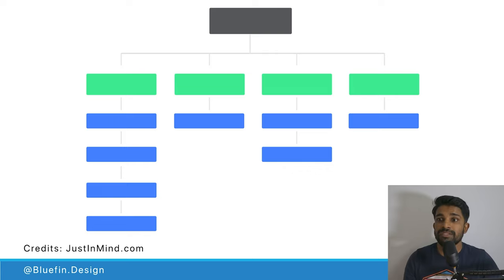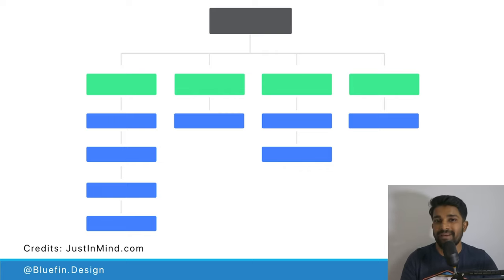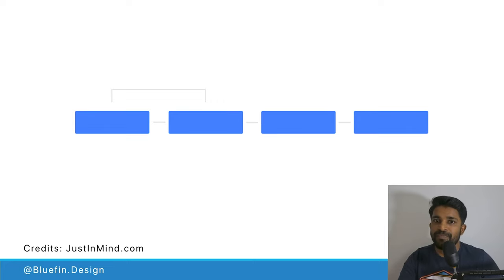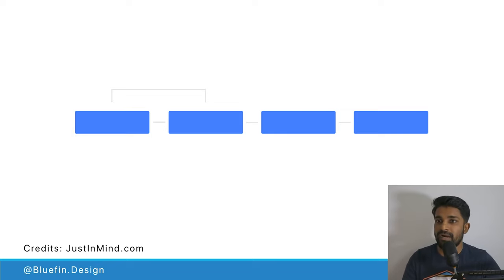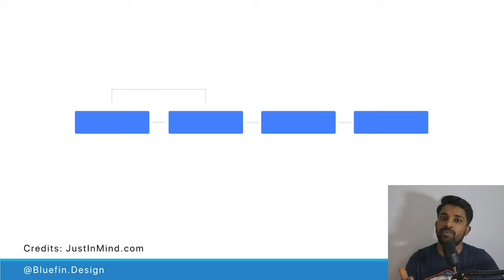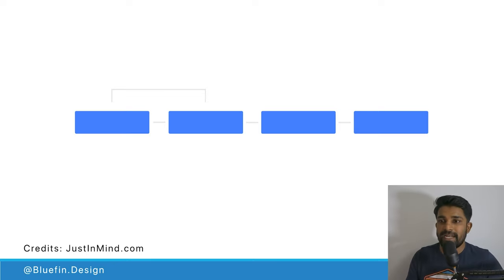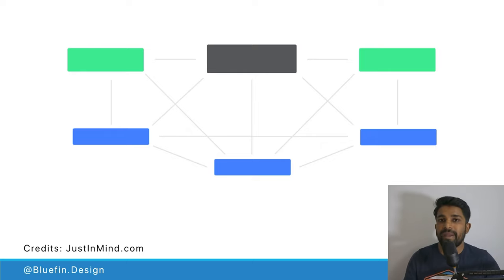Here's an example of a hierarchical organization structure — content is divided with a certain hierarchy that applies to your product or industry. This is credited to justinmind.com. The same site also shows a sequential structure — for example, an e-commerce website flow where you search for an item, add it to the cart, continue browsing, and then go to checkout and payment. That sequential process is a good example for e-commerce.